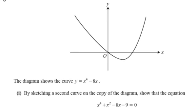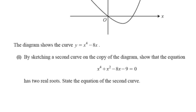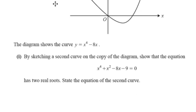And they've given us the sketch of part of this function. So we've got to work out what graph we need to draw in order to show that it's got two real roots. So if we think about what they've given us, they've given us the graph of x to the power of four minus eight x.